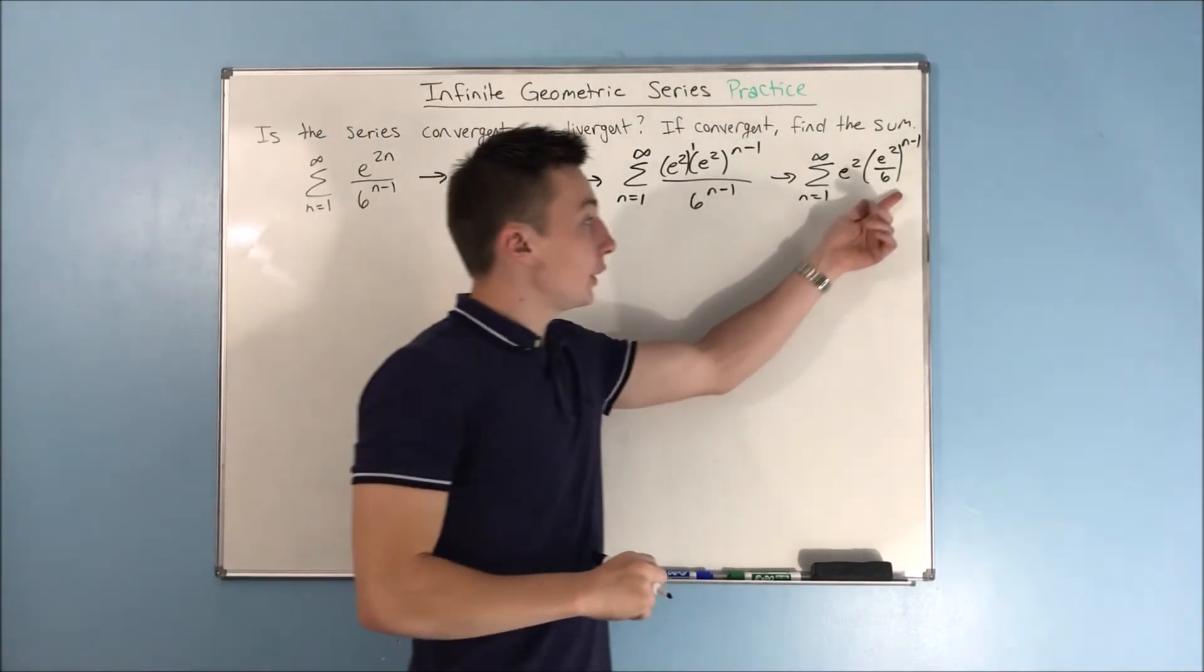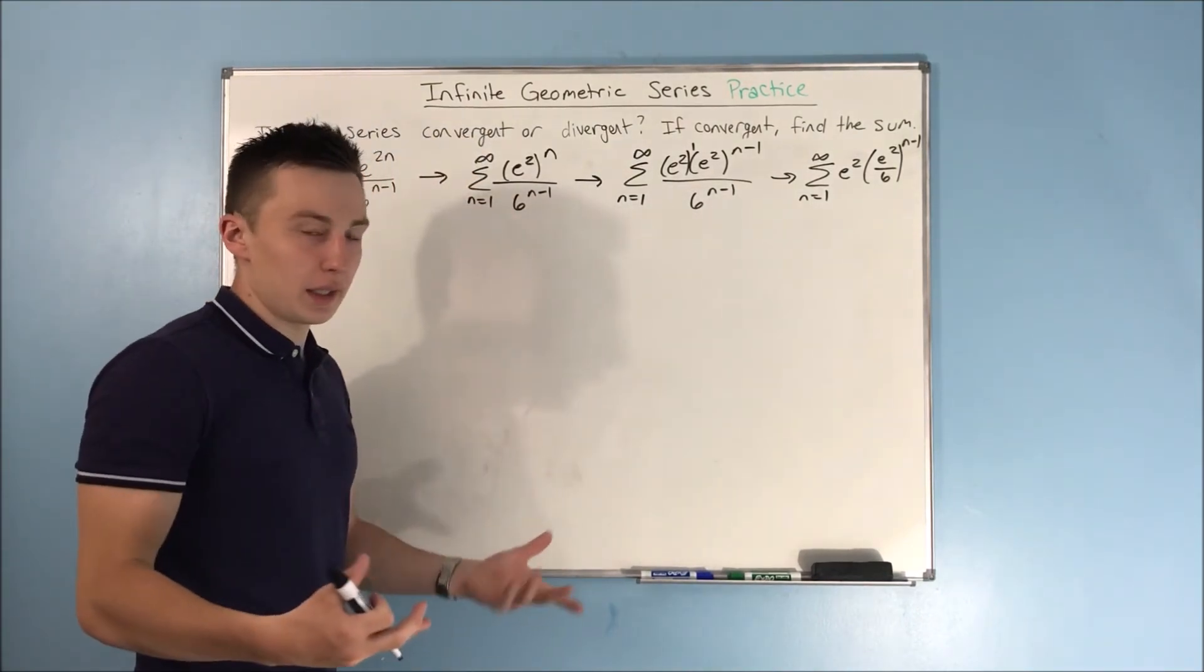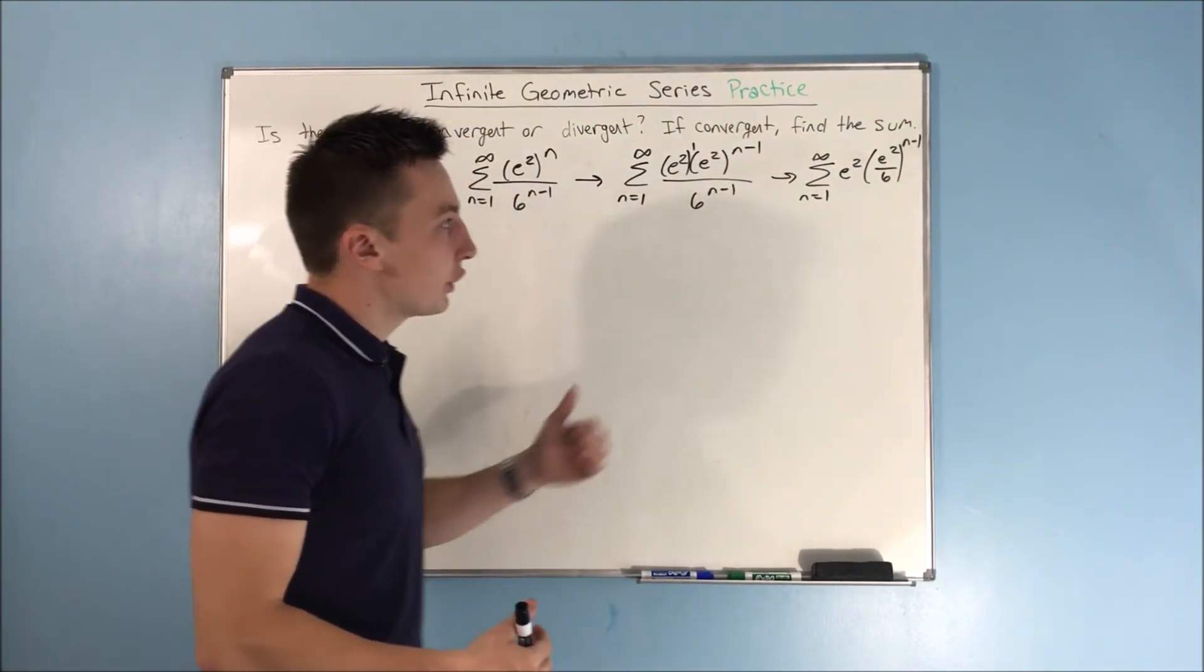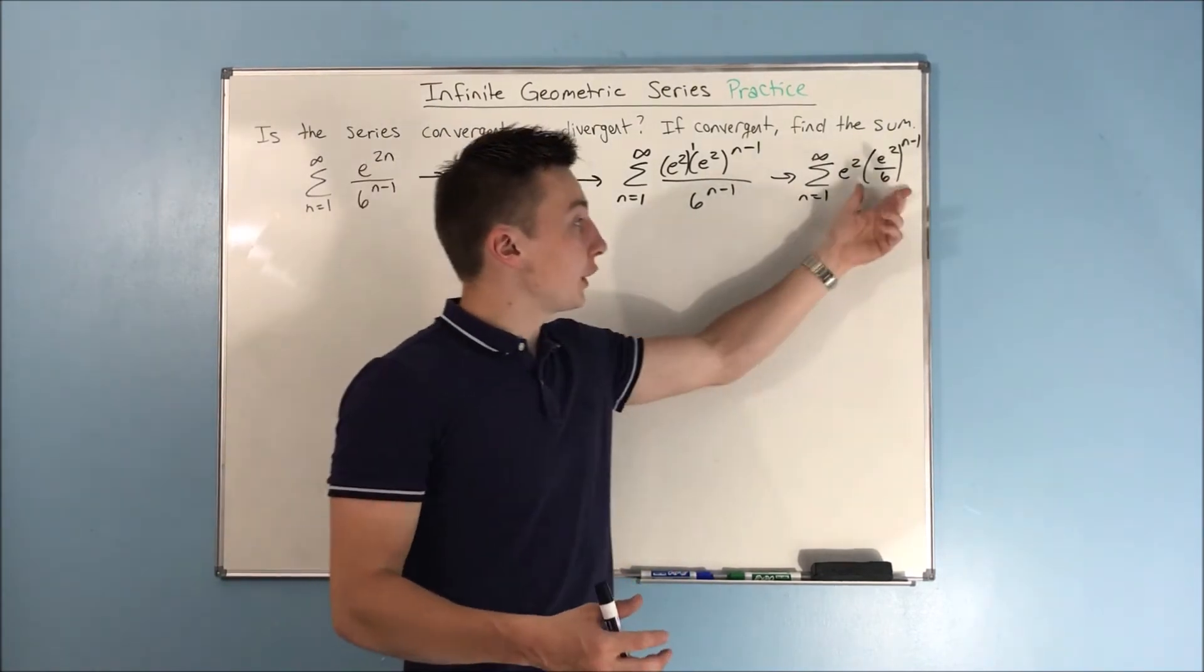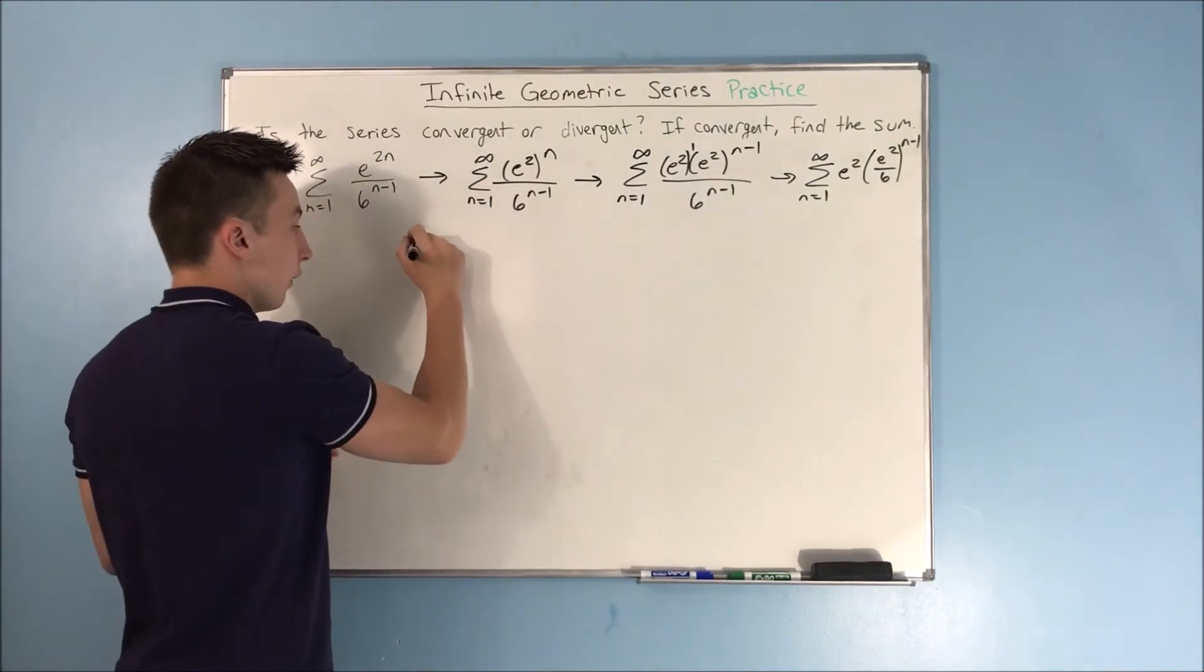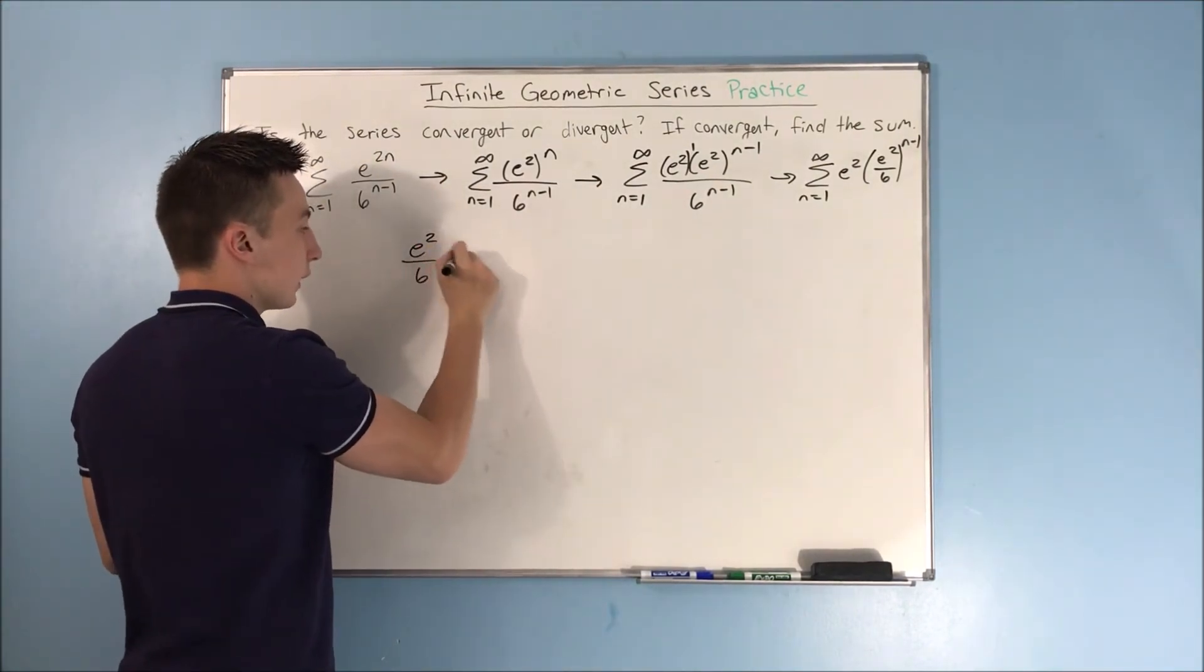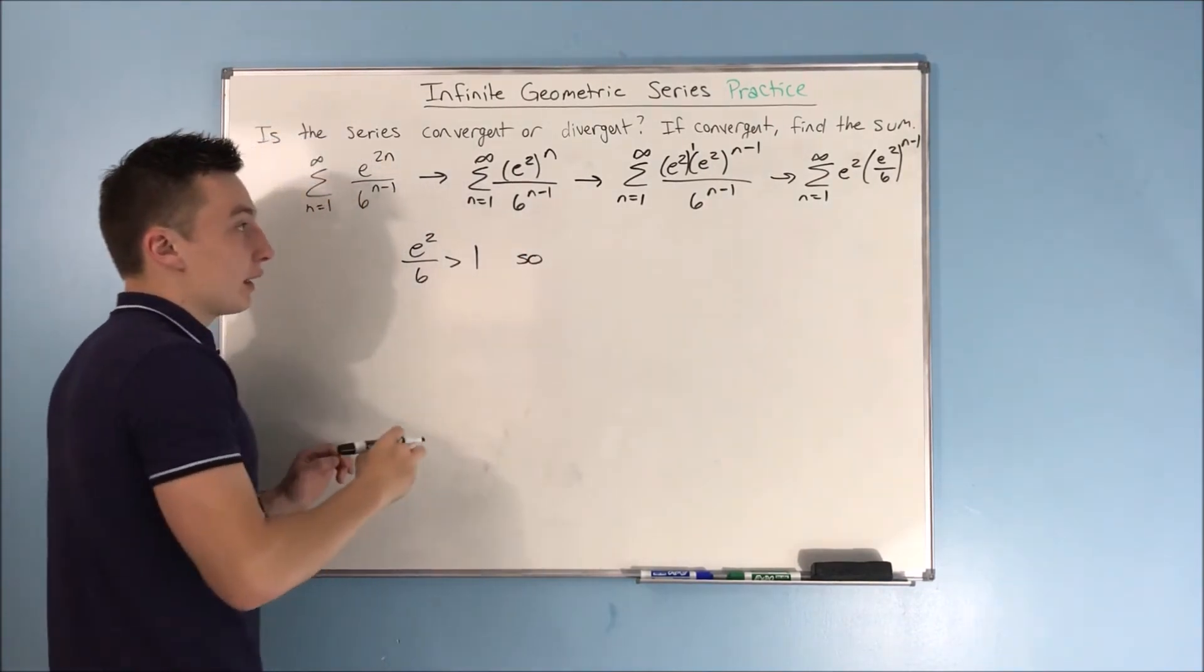The question is now, is our common ratio greater than 1 or less than 1? Because we know it's not negative, so we don't need to worry about any of that. And e squared, I believe, is like 7 something, anyways, your common ratio is going to be greater than 1. So, since e squared over 6 is greater than 1, we have a divergent series.